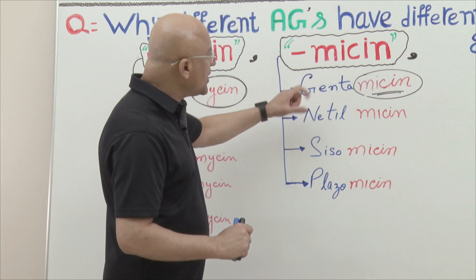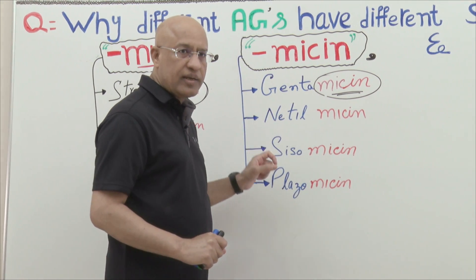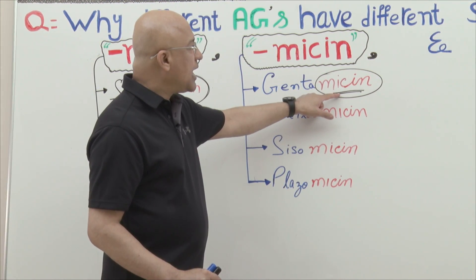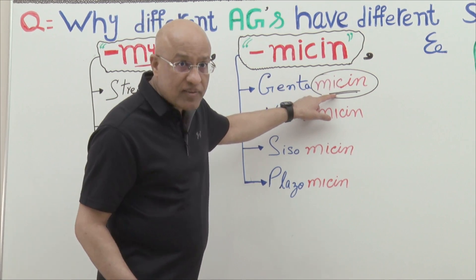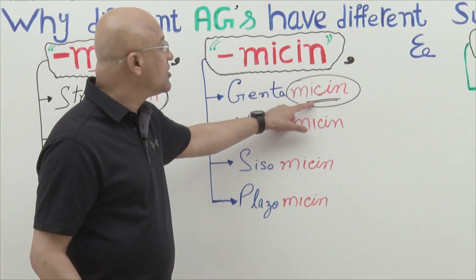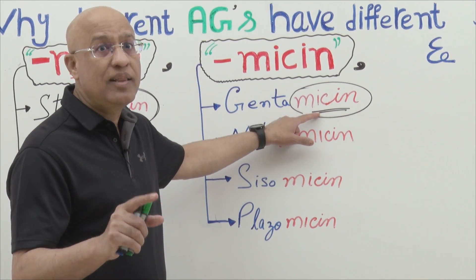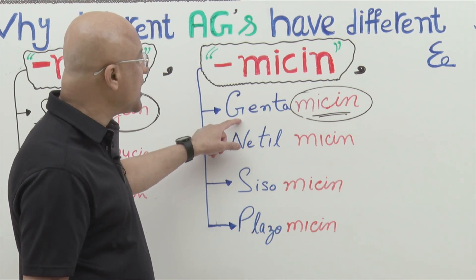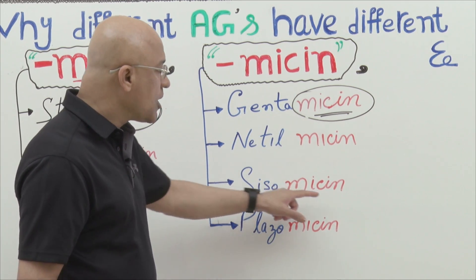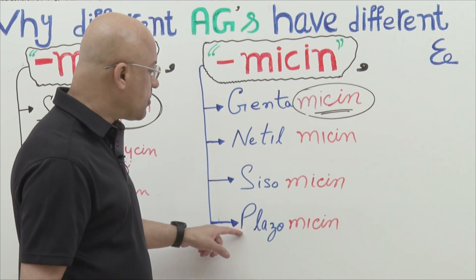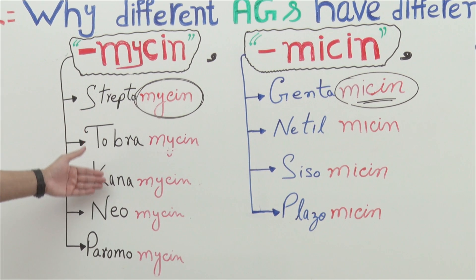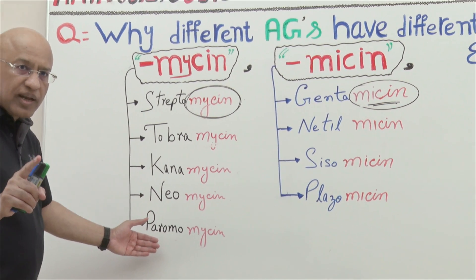Sometimes students get confused why some other aminoglycosides have at the end not '-mycin' (M-Y-C-I-N) but rather '-micin' (M-I-C-I-N). For example, gentamicin, netilmicin, sisomicin, and plazomicin.